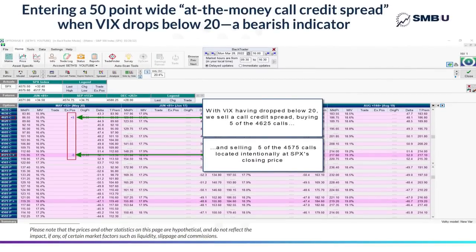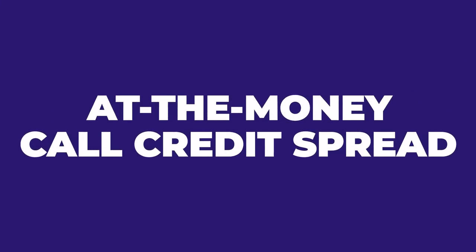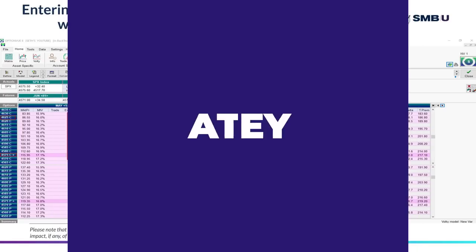So let's say on that day, we went out about two months to the May 20 options expiration, and we went ahead and sold five of the 4575 calls and bought for protection five of the 4625 calls expiring on the same day. When we do that basic structure — selling calls at the price that the index is trading and buying calls above that for protection in the same expiration chain — we're entering into what options traders refer to as an at-the-money call credit spread, which is actually a bearish position.